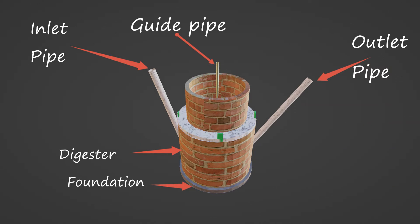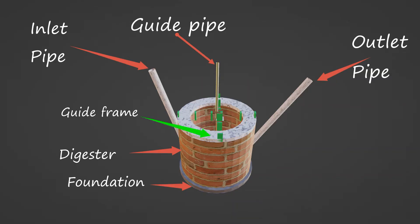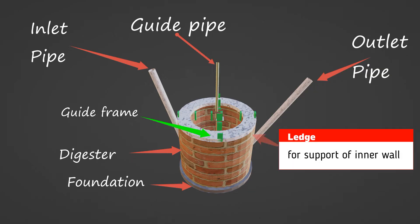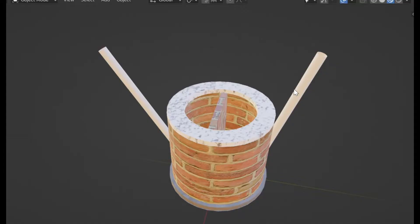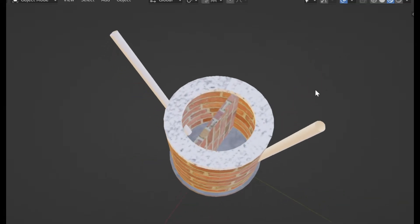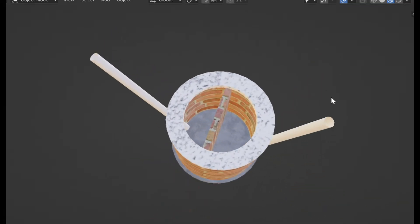Removing the top outer wall and inner wall exposes the guide frame made of angle iron, which supports the guide pipe. The guide frame enables free up and down movement of the gas holder while keeping it in a vertical position. The guide frame can be built outside the digester to prevent the angle iron from rusting.